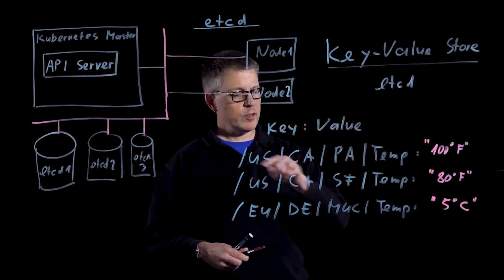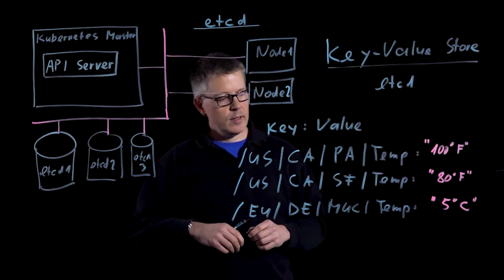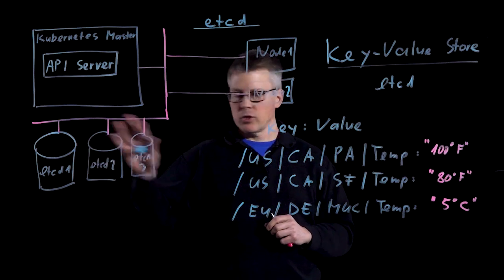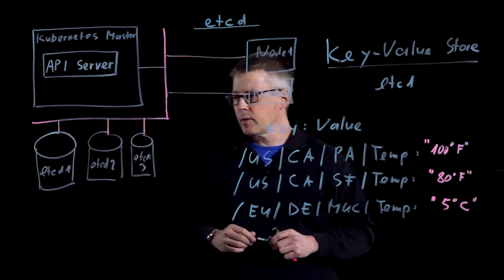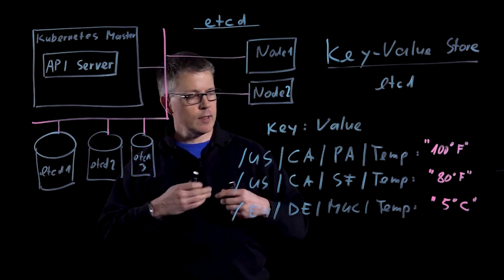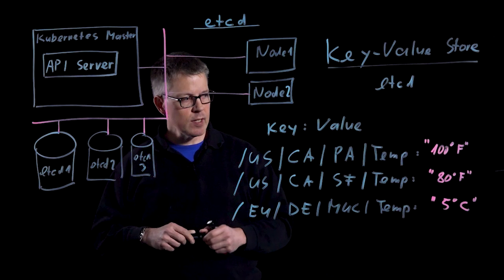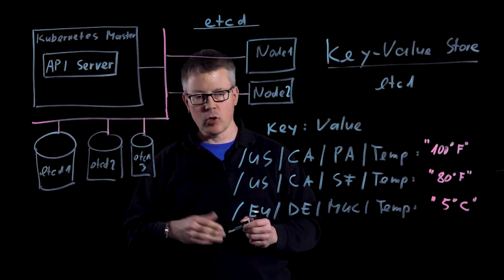You see here, we have the key and the value. And the etcd cluster actually distributes this information across this cluster in a highly reliable way. And you can enter and read the data by RESTful API or by some command line tools.